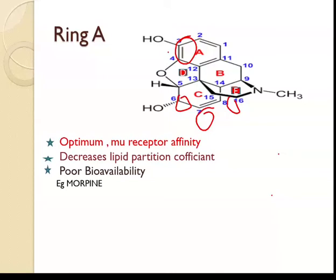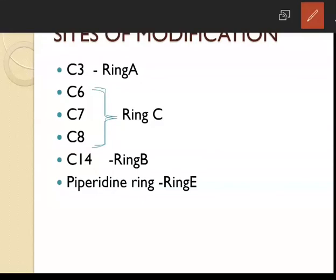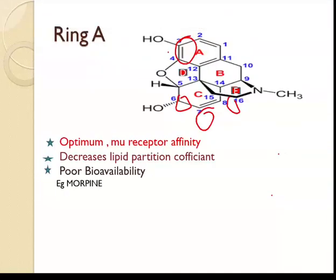Starting with Ring A, the phenolic group: the free phenolic OH group at position C3 gives optimum mu receptor affinity and decreases the lipid partition coefficient, resulting in poor lipid solubility.